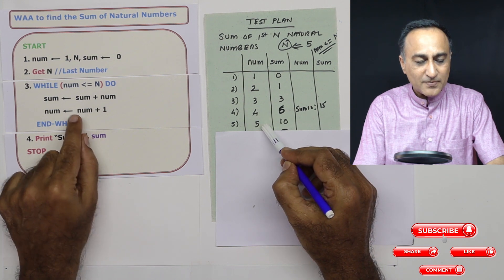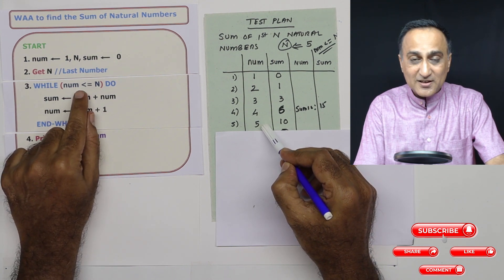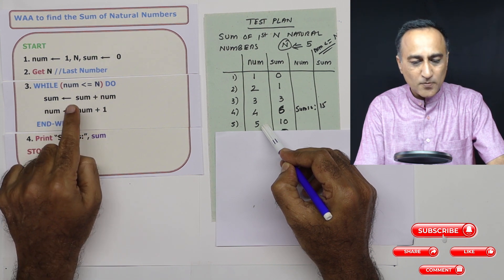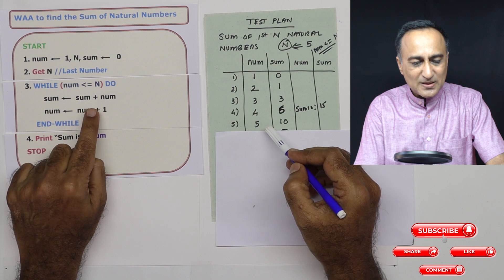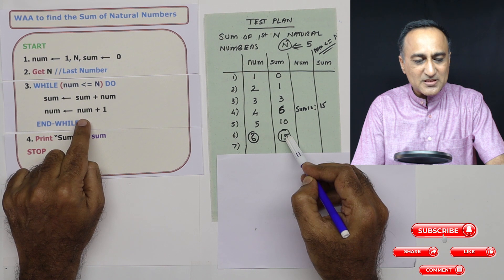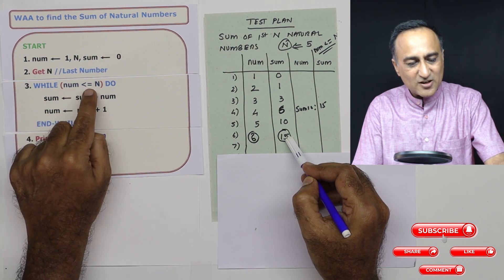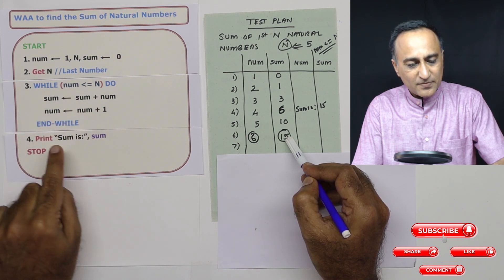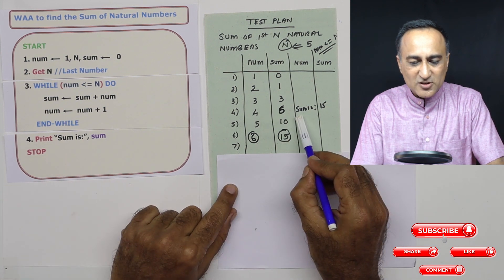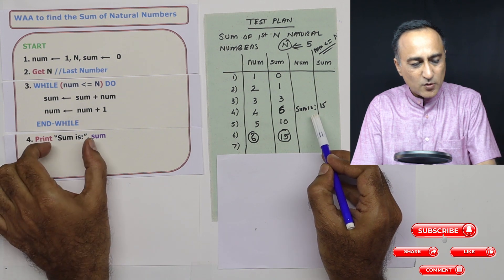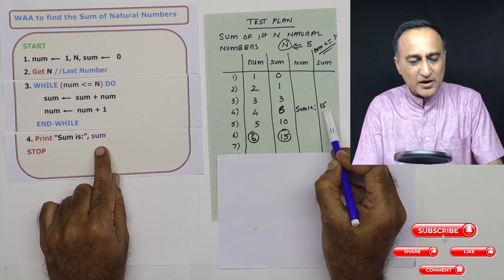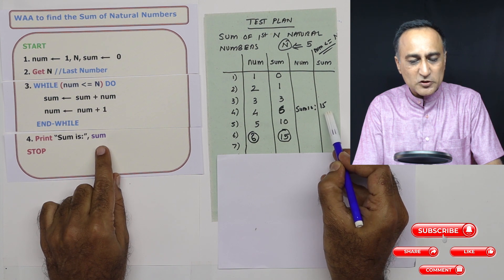Number is 5. Five is not less than 5, but it is still equal to 5, so the condition is still true. Sum is sum plus number — 10 plus 5 equals 15. At this point number becomes 6. Six is not less than or equal to 5, so we exit and print: sum is 15. Whatever is in double quotes comes as-is, and the value in the variable sum — which is 15 — is printed.